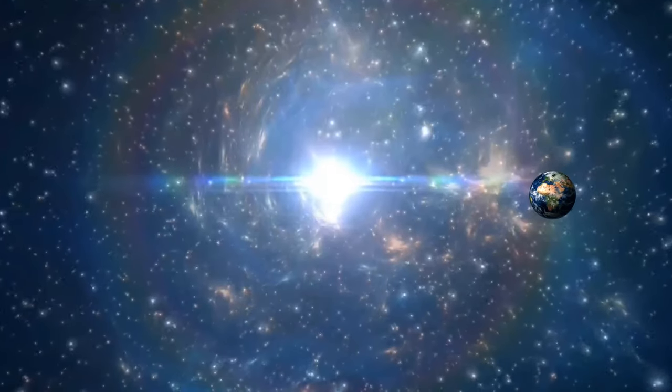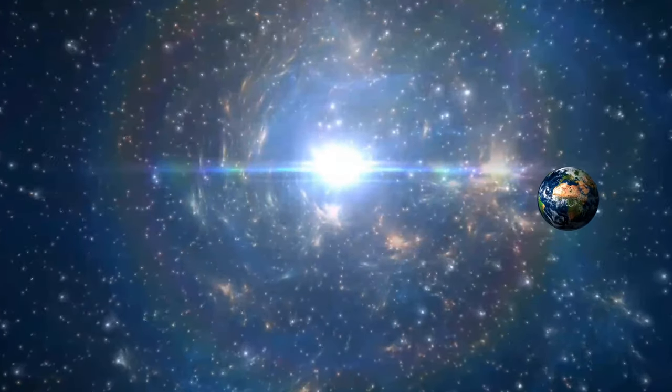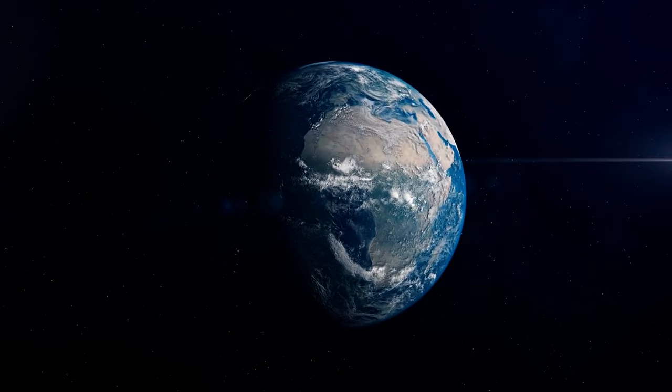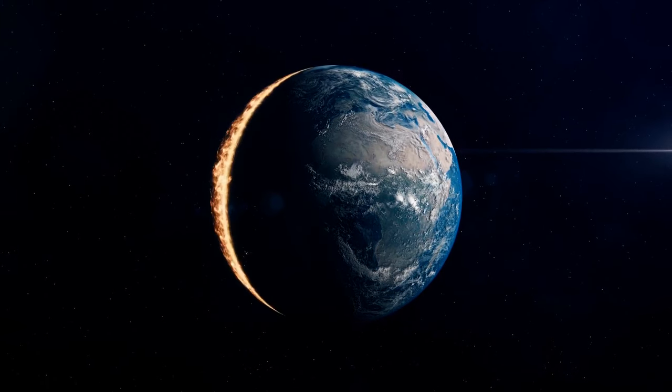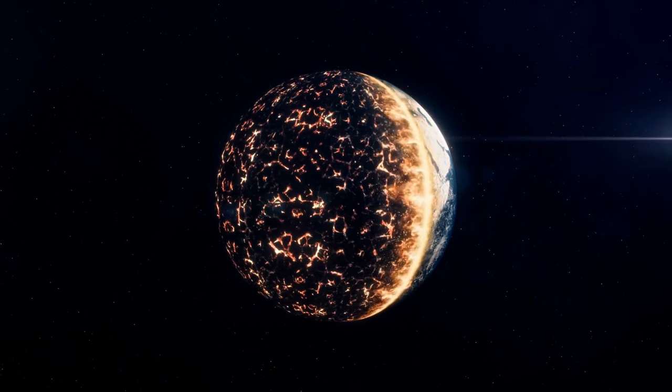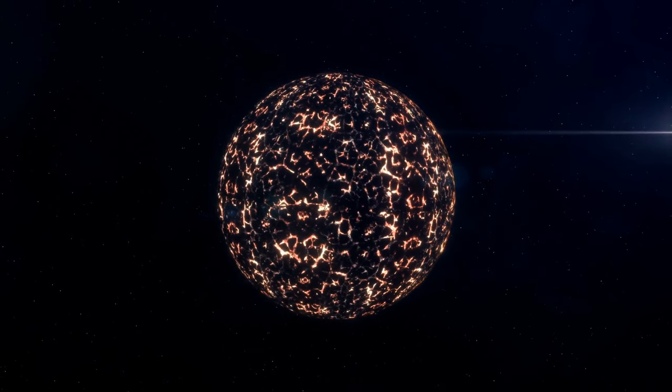If a supernova occurred around 30 light-years away from Earth, it would be a huge problem. An incredibly powerful blast of radiation would bring a massive influx of high-energy neutrinos. Our poor planet would be vaporized in just a fraction of a second.